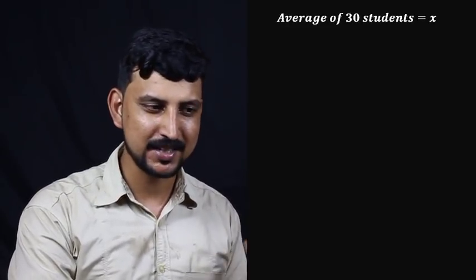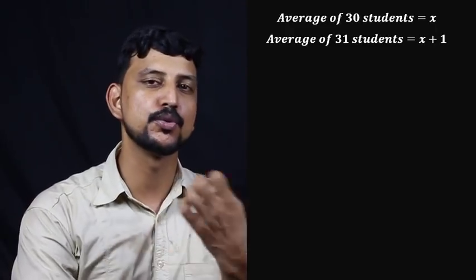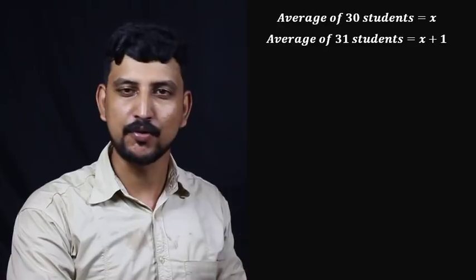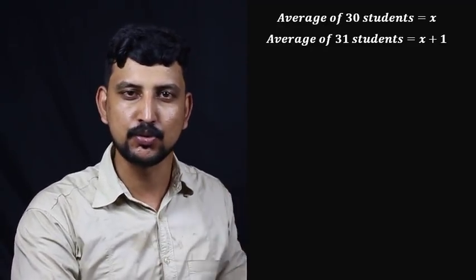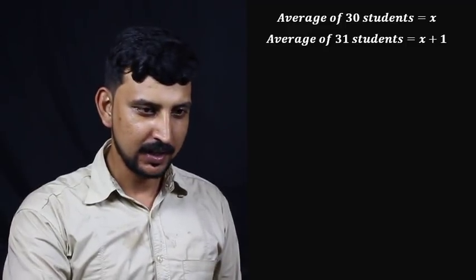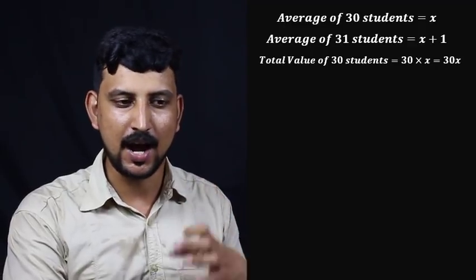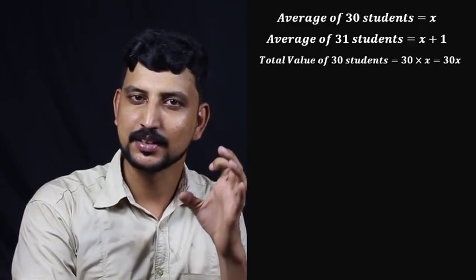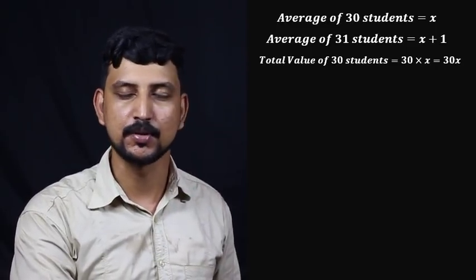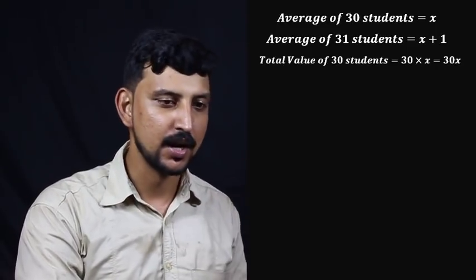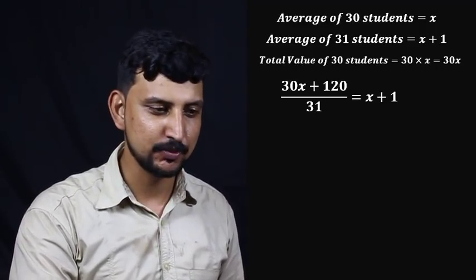What is the point? This is the total average. Every one average of 30 students — so x is the average of 30. That is 30 plus 1, so x plus 1 is the new average of 31 students. The total value of 30 students with average x is 30x.